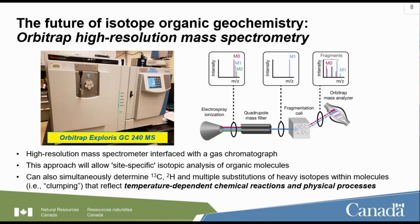For example, clumping — which reflects temperature-dependent chemical reactions and physical processes. More clumping means lower temperature of fire, in theory; less clumping means higher temperatures. This work involves a lot of experimentation to determine how temperature relates to clumping in PAHs, and also to see if we can use the fragments of PAHs as they're ionized in the source to relate those to potential temperatures. We're looking at different types of burn material, different oxygen conditions, and so on. As mentioned, it's entirely lab-based and focused on this instrument.